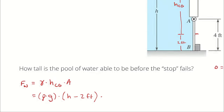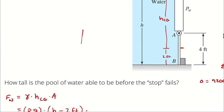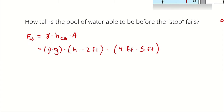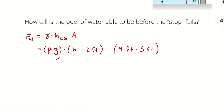The area of effect of this door is 4 feet by 5 feet, because it is 4 feet tall and 5 feet wide, so the area of effect is 4 feet times 5 feet. I can assume standard gravitational acceleration, which is 32.2 feet per second squared.